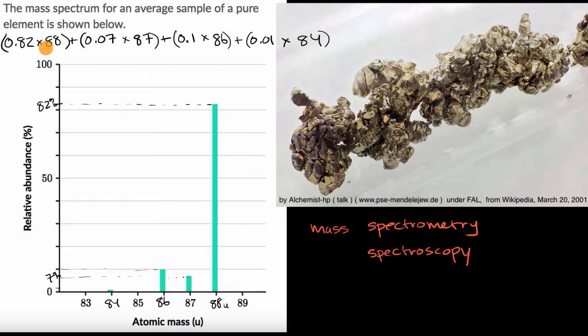We can see that it's going to be close to 88 because that's where the highest percentage is. When we're taking the weighted average, we have the highest weight right over there. But these other isotopes, these other versions of the element that have a different number of neutrons, which changes its atomic mass, they're going to bring the average down. So our average atomic mass is going to be a little bit less than 88.